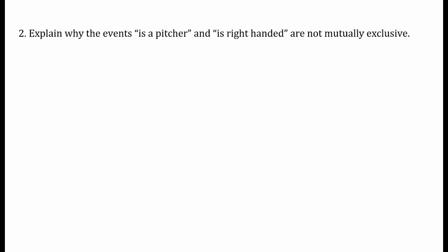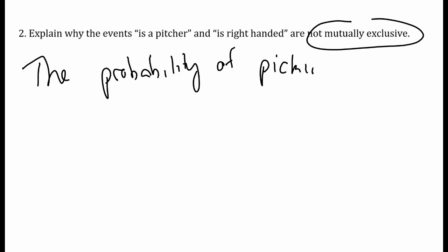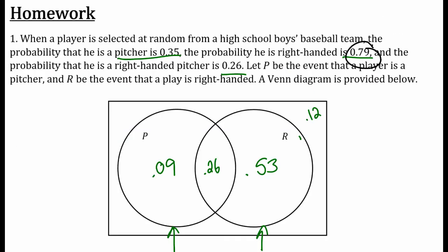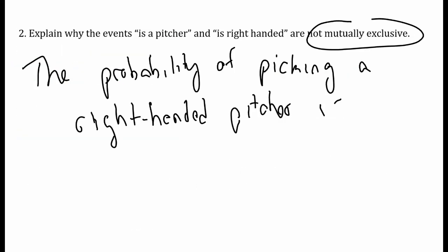Explain why the events 'is a pitcher' and 'is right-handed' are not mutually exclusive. Well, mutually exclusive means they share no outcomes. So why are they not mutually exclusive? Because the probability of picking a right-handed pitcher, of both events occurring... Well, if there were none of them, that would be zero and they'd be mutually exclusive. The circles wouldn't overlap, but the circles do overlap right there with 26%, is 0.26, not zero. If it was zero they'd be mutually exclusive, but because it's 0.26, there is some overlap. There's some that are both pitchers and right-handed, so they are not mutually exclusive.